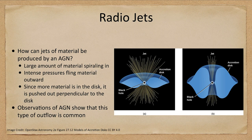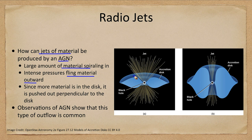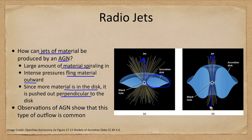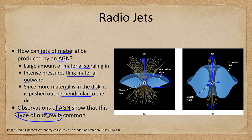We also get jets of material — how can jets be produced by an active galactic nucleus? Large amounts of material are spiraling in, creating intense pressures that fling material back outward. However, the disk of material around the black hole prevents outflow in the direction of the disk, so material is pushed out perpendicular to the disk. The thicker the disk, the more confined the jets will be, as less material can escape sideways. Observations of active galaxies show that this type of outflow is very common.